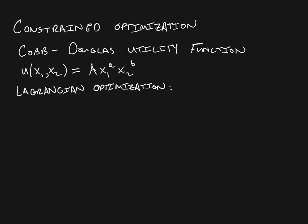Hey everyone, Zeb here. Just going to build on what we've been doing in the last installment of the constrained optimization series. In the last video we looked at the Cobb-Douglas utility function and we solved for the consumer's optimal consumption bundle using the property that in equilibrium the marginal rate of substitution is going to be equal to the slope of the budget line, finding where the indifference curve is tangent to the budget line.